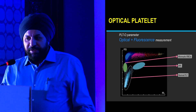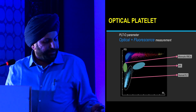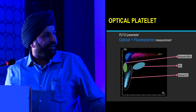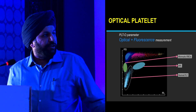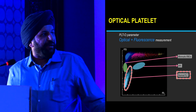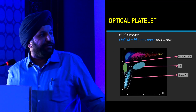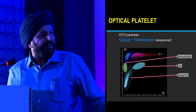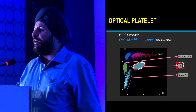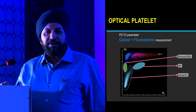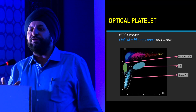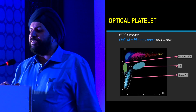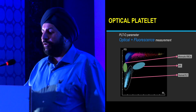This is the red scattergram on a BC 6800. The blue area here is the area of the normal non-reticulated platelets. The y-axis is the forward scatter or the size, and the x-axis is the fluorescence. Just to the right and above is the area of the IPF — the immature platelet fraction — which is actually an accumulation of not only reticulated platelets but also giant platelets. Together, both these areas constitute the area of the optical platelet on the analyzer.